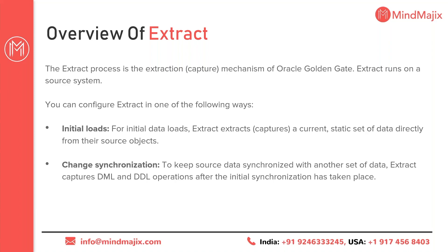Now we will have an overview of the extract process. Extract is one of the capturing processes in GoldenGate. It captures all the changes that are being made to the data. The extract process reads changes either from the redo log files or from the archived log files — it has two sources because when redo log files are overwritten, the data moves to the archived log files and GoldenGate goes there to read it.